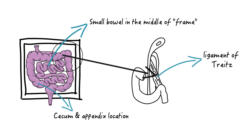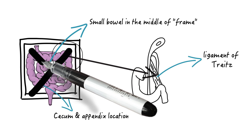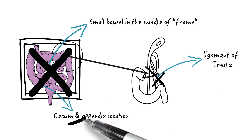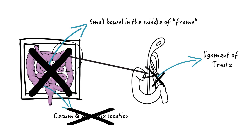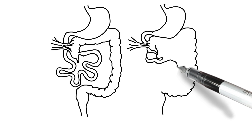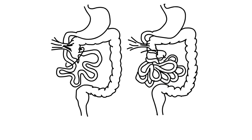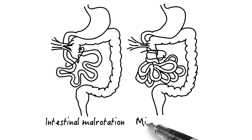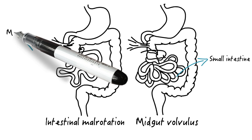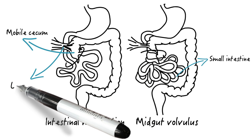In malrotation, this orientation does not happen. There is no ligament of Treitz fixation, and there is no real fixation of the cecum. Everything is loosely fixed, and the bowel can easily twist around its base, essentially strangling itself at the root of the mesentery that includes the entire superior mesenteric artery territory. This twist, or volvulus, can happen especially if the mobile duodenum is stuck to the mobile cecum by adhesions we call Ladd's bands.